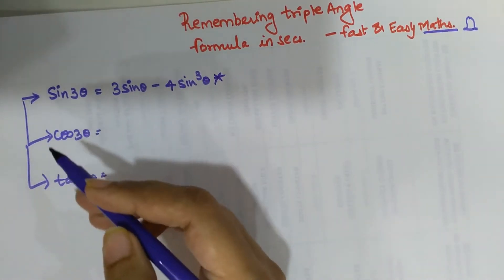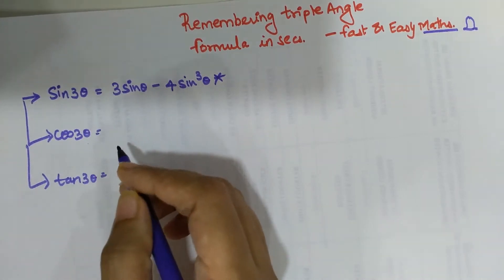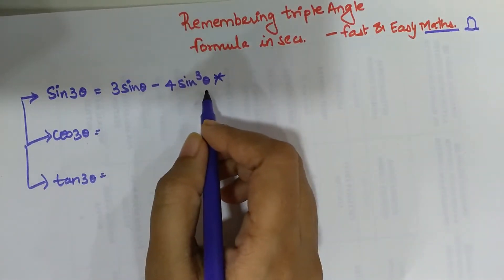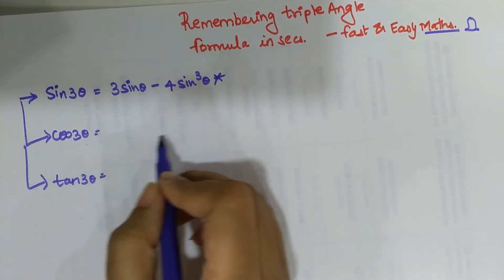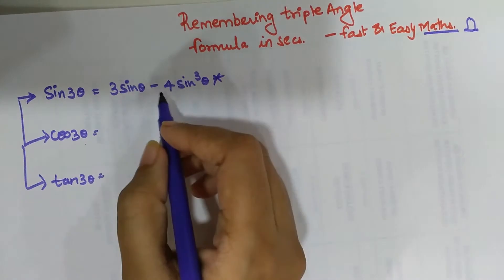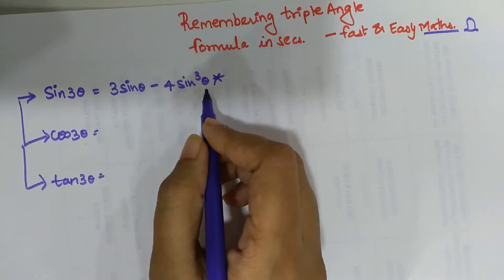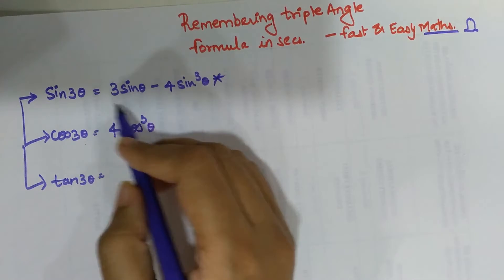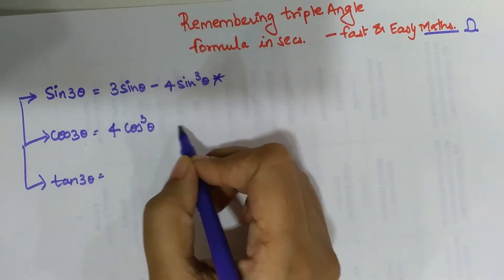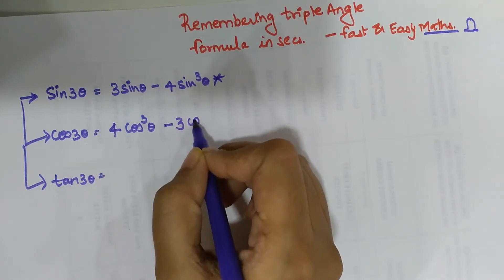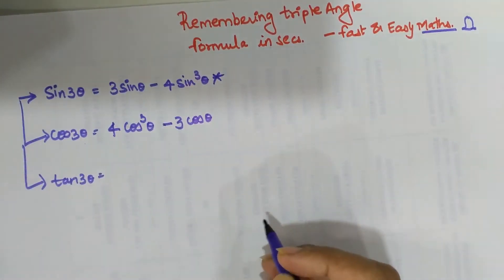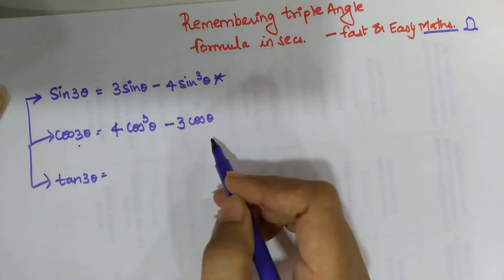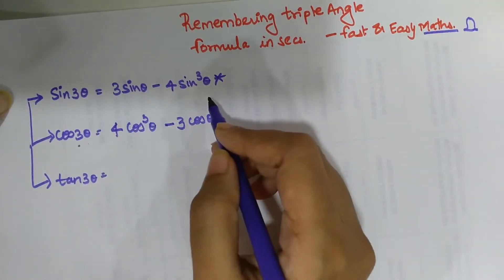As we all know, sine and cosine are exactly opposite of each other, so the formula will also be opposite. The sine formula is entirely in terms of sine, so the cos formula will be entirely in terms of cos. The negative 4 sin³θ becomes positive 4 cos³θ, and the positive 3 sinθ becomes negative 3 cosθ. So cos 3θ equals 4 cos³θ minus 3 cosθ.